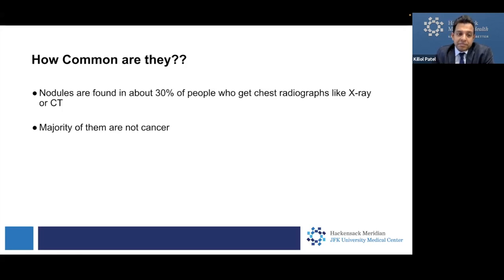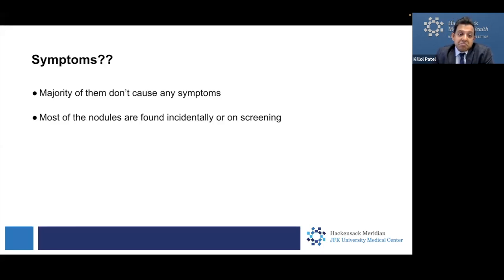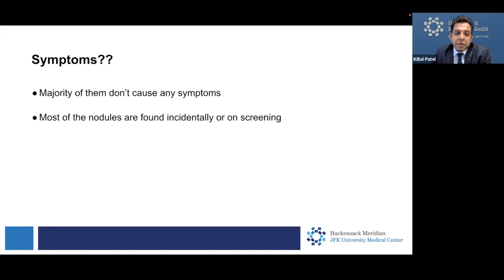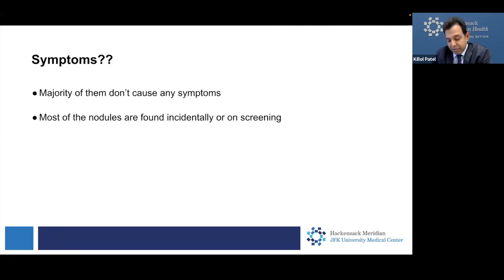How common are lung nodules? Nodules are found in about 30% of people who get chest radiographs — whether an x-ray or a CAT scan. They're quite common and the majority of them are not cancer. What are the symptoms? Majority of them don't have any symptoms, unless it's from an infection, in which case you might have fevers, chills, or coughing. Most of the time they're not symptomatic and are found on a test done for some other reason — for example, somebody might go to the emergency room for a bellyache, get a CAT scan, and they see a spot on the bottom of the lungs. That's called an incidental pulmonary nodule.